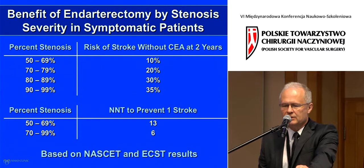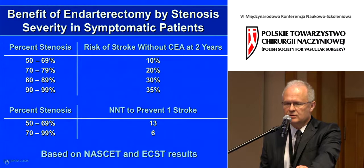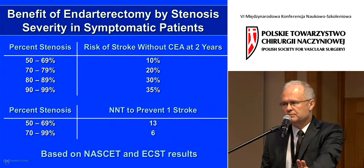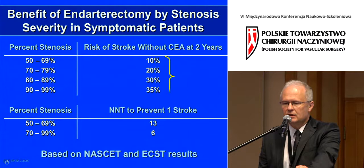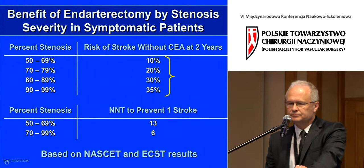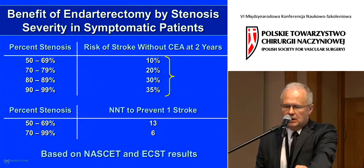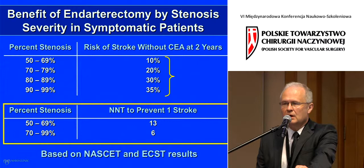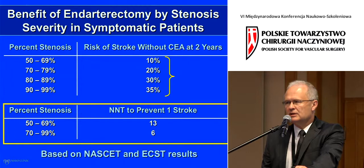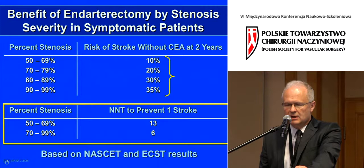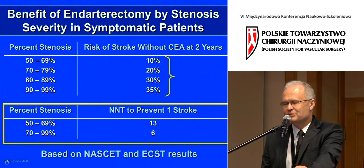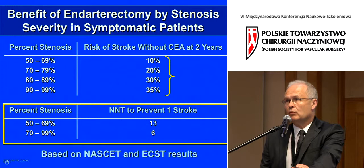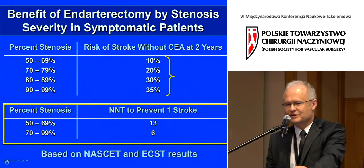Severity of stenosis plays a role. The big trials from the early 1990s clearly showed a linear relationship between severity of stenosis and stroke risk without surgical treatment, and pointed to enormous benefit of surgery over medical therapy at that time. Those trials showed a number needed to treat of six patients to prevent one stroke. Current trials are showing you need to treat 100 or 200 patients to avoid an outcome — a remarkable change.